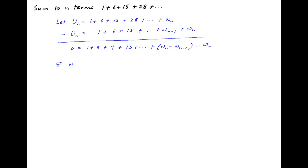This implies that wn is equal to 1 plus 5 plus 9 plus 13 plus and so on till n terms. Notice that the series on the right hand side is an arithmetic progression whose sum is equal to n upon 2 times in brackets 2 times 1 plus n minus 1 times 4.